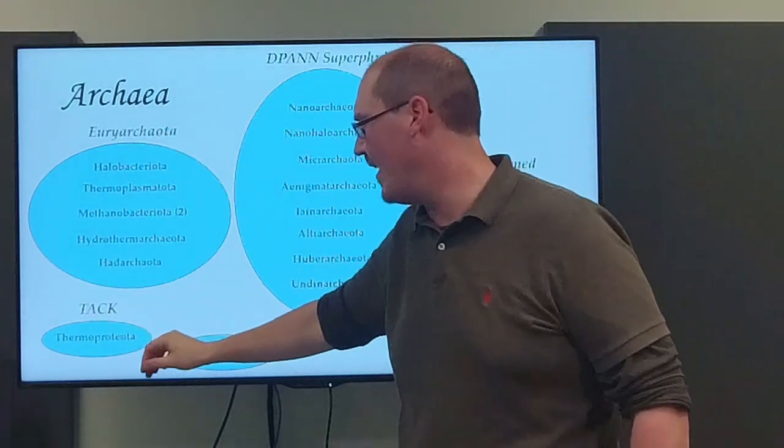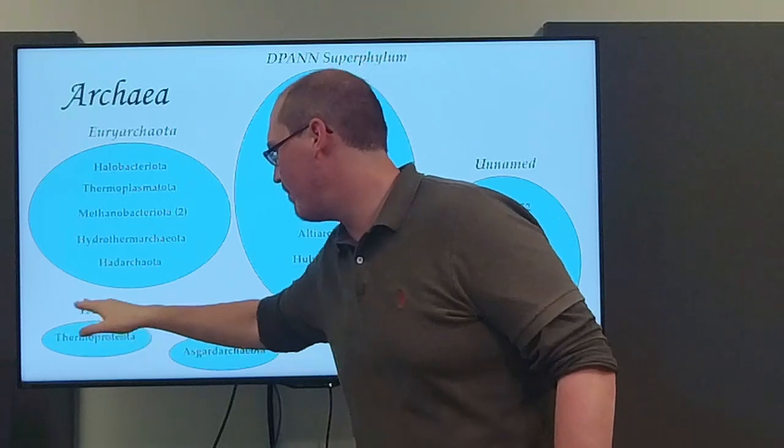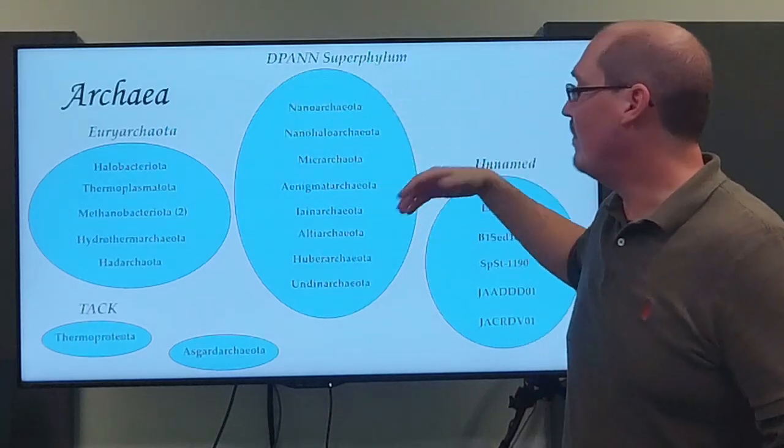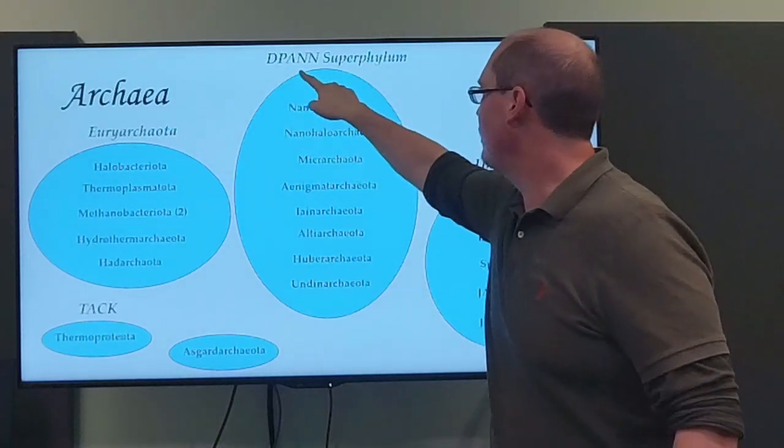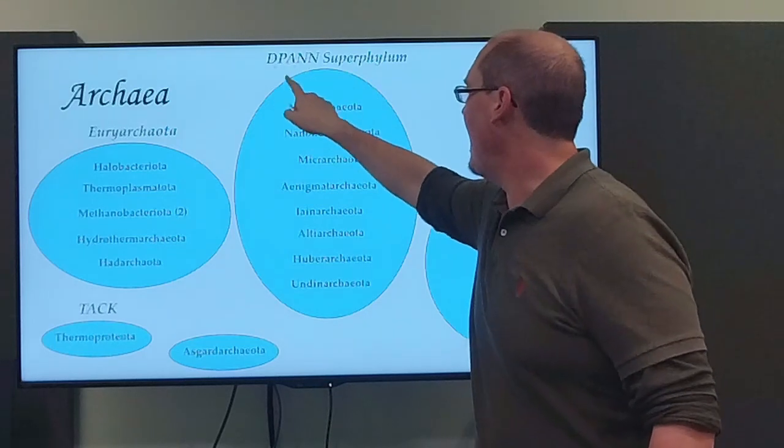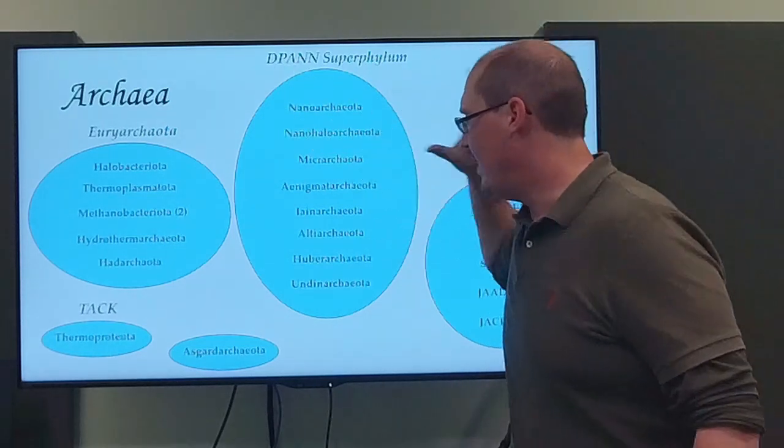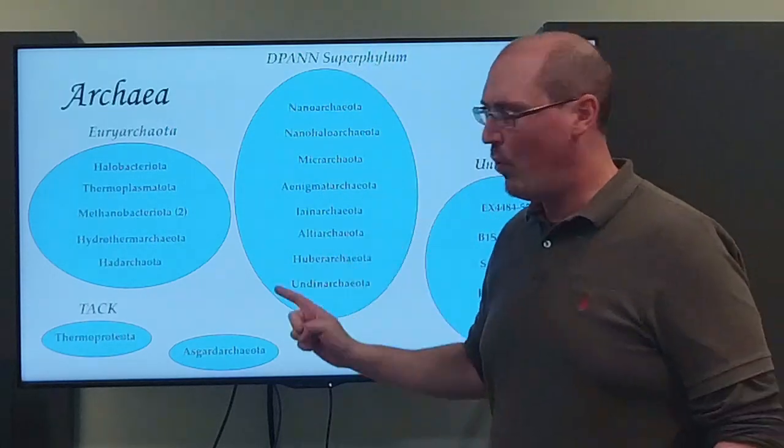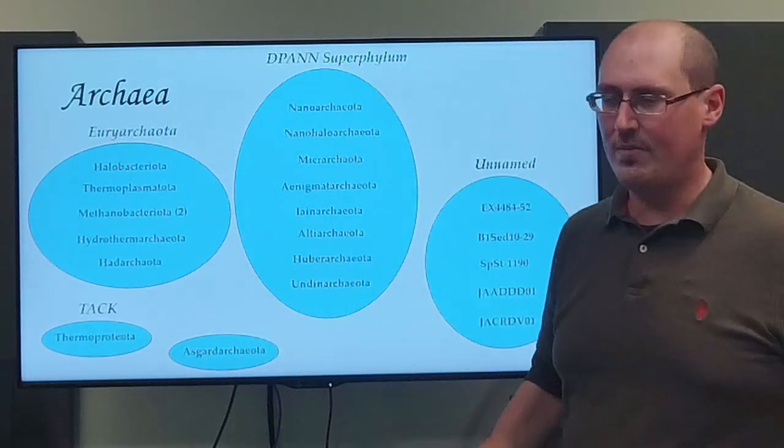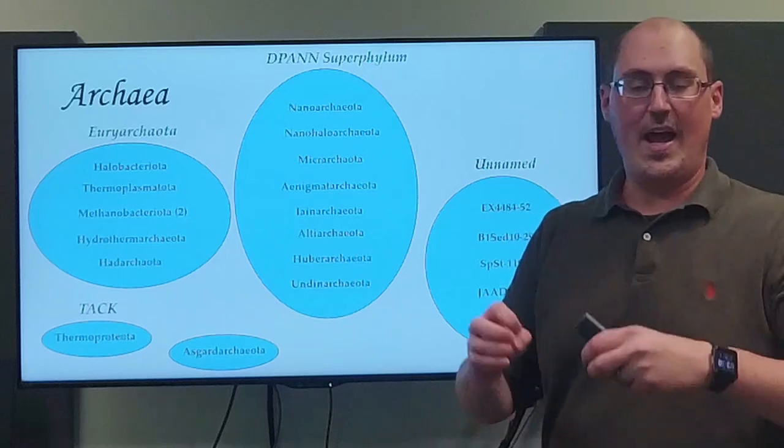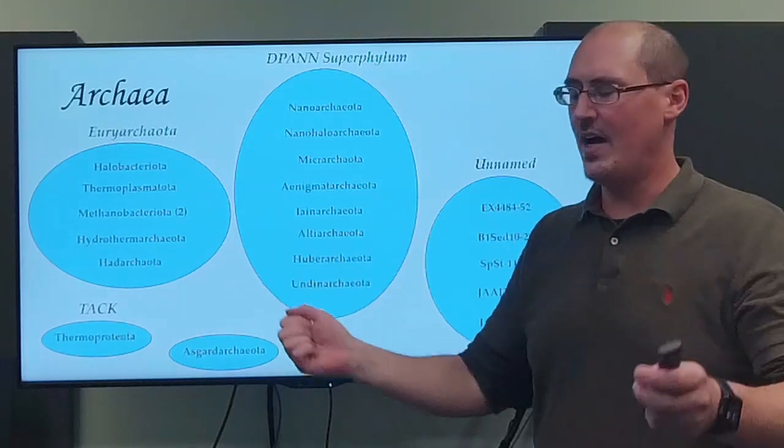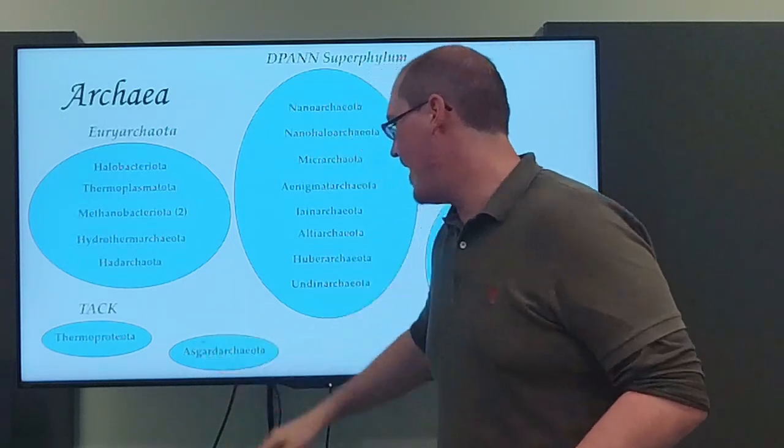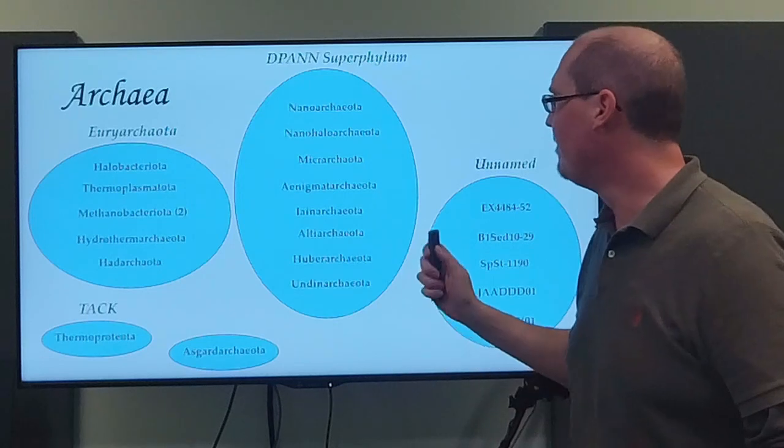So I talked about Euryarchaeota. There's TACK. This used to be the superphylum. Used to be that acronym, but they all kind of got broken down into Thermoproteota now with modern phylogeny. Then there's the DPANN superphylum. Again, acronyms. The only two extant ones are these two at the ends. And then the D, P, and A are now subphyla within Nanoarchaeota. And then a bunch of other ones, as they were discovered, were tacked onto the superphylum. There's unnamed, so more dark matter. And then a very important one, Asgardarchaeota, very recently described. It turns out, rather than eukaryotes being a sister group to archaea, it's most likely that eukaryotes actually arose out of archaea itself, namely Asgardarchaeota. So very interesting stuff there.